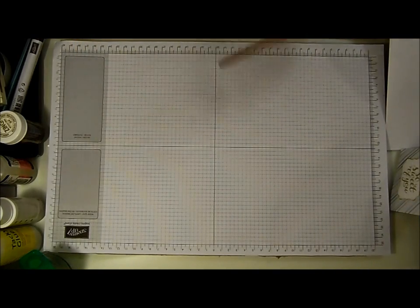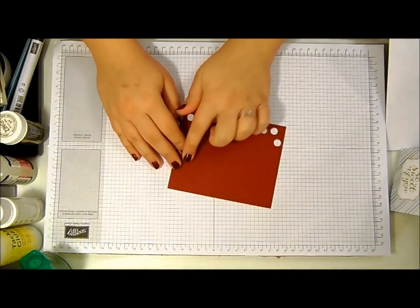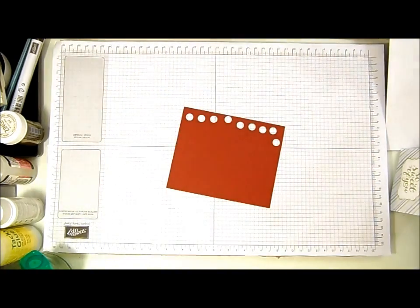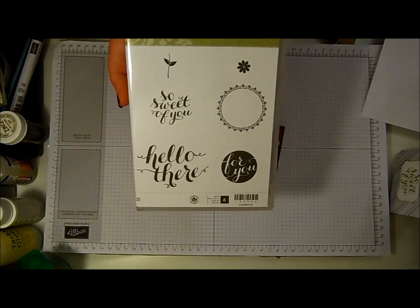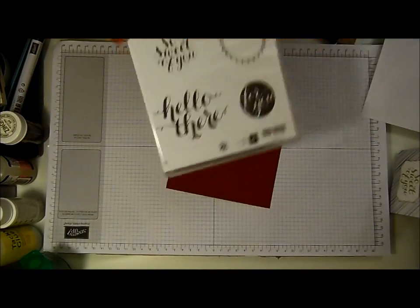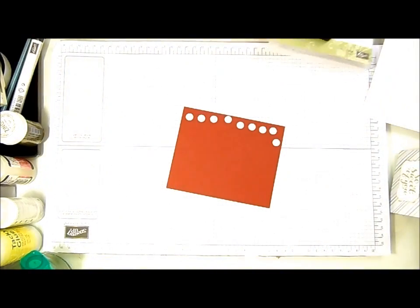Before we get to the envelope punch board I've got a piece of Cherry Cobbler cardstock and the Hello There stamp set. I'm going to use the So Sweet Of You stamp and heat emboss it.